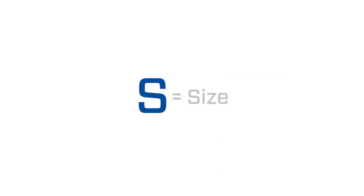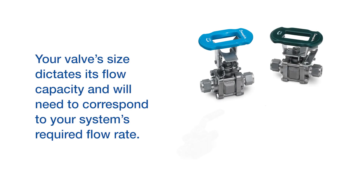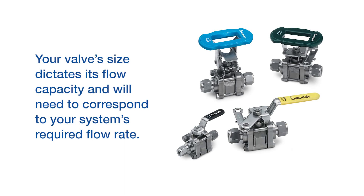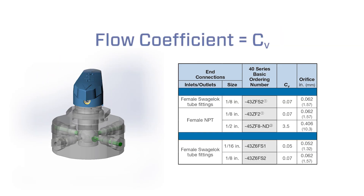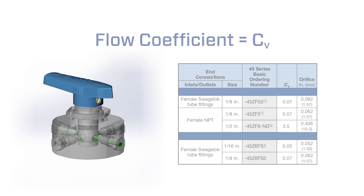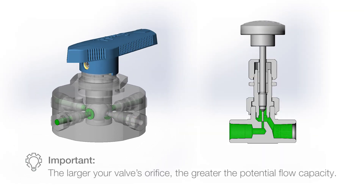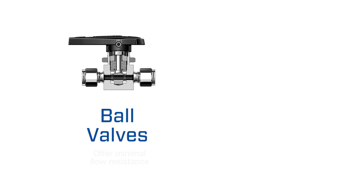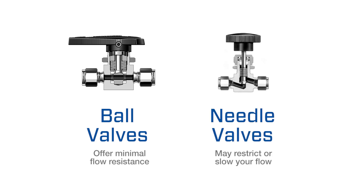First, determine the size you need. Your valve's size dictates its flow capacity and will need to correspond to your system's required flow rate. Manufacturers typically provide a flow coefficient indicating the relationship between pressure drop across the valve and the corresponding flow rate. The larger your valve's orifice, the greater the potential flow capacity. For example, ball valves offer minimal flow resistance, but a needle valve may restrict or slow your flow.